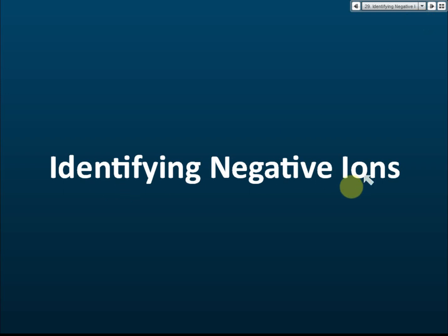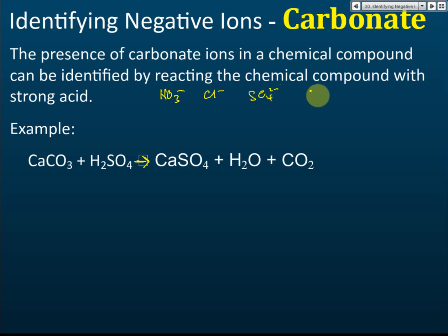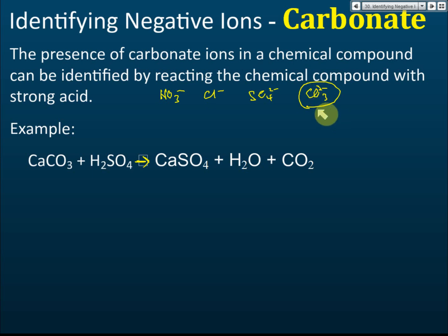Identifying negative ions. First, identifying carbonates. To identify carbonate is easy. There are four negative ions we need to know: nitrate, chloride, sulfate, and carbonate. Carbonate is the only one among these four that will react with acid, so you just test it with acid.